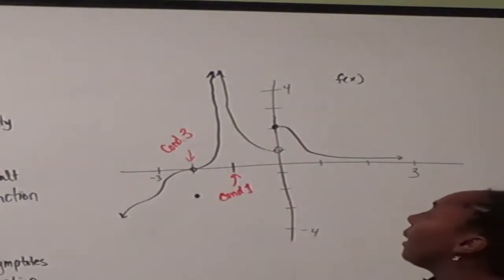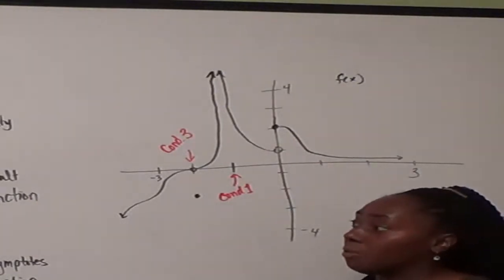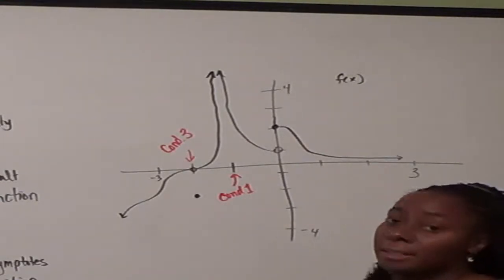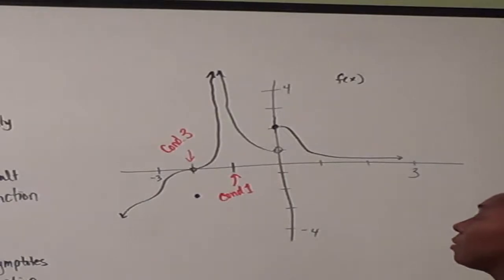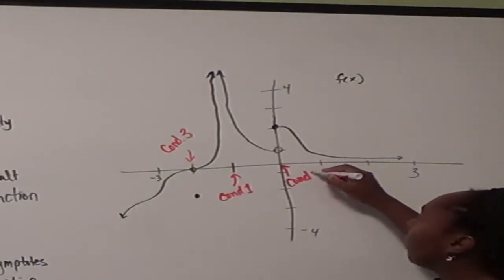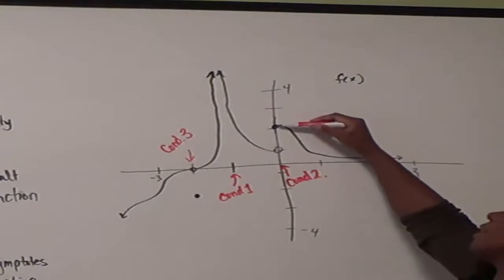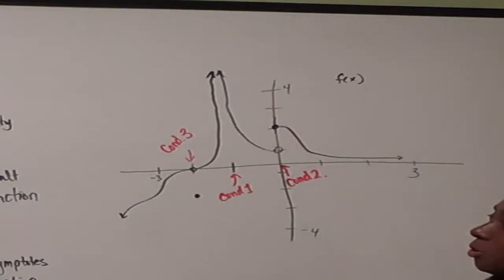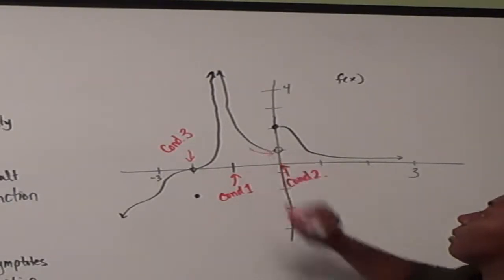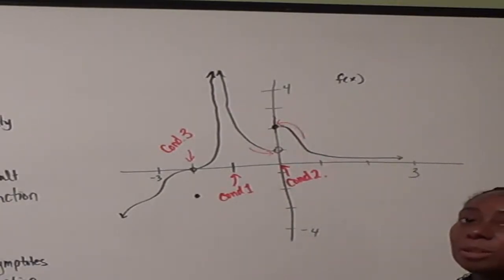At x equals negative 1, we can see there's a vertical asymptote. Both sides go to positive infinity, so the limit exists, but the function is not defined there — x equals negative 1 is not a point in the domain of the function. And then here at x equals 0, this is an example of where condition 2 fails. The function is defined at the point — f of 0 is equal to 2, so the first condition holds. But when we get to the second condition and look at our one-sided limits, coming in from the left we're going to positive 1, and coming in from the right we're going to 2, so the limit does not exist.